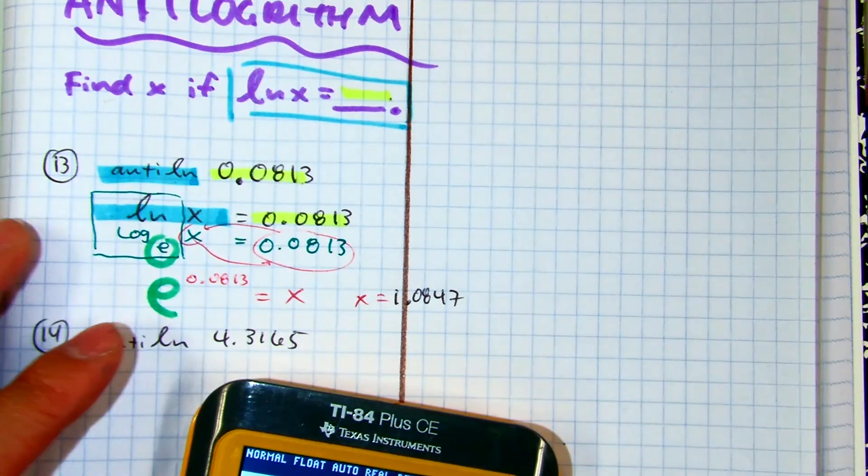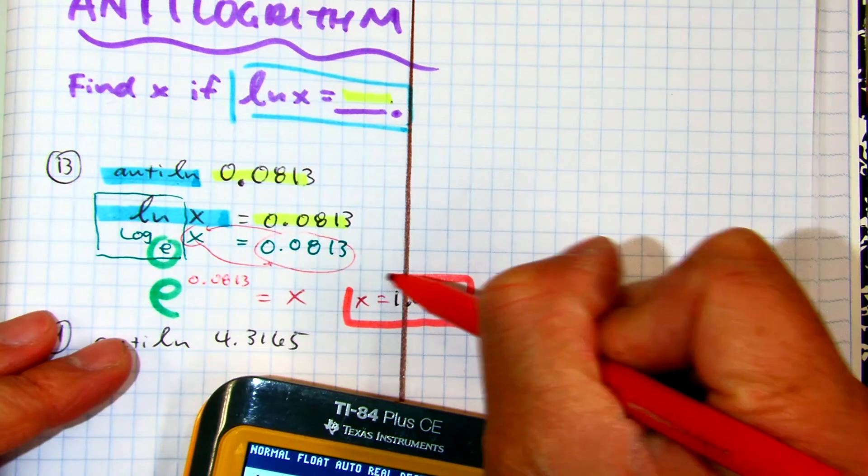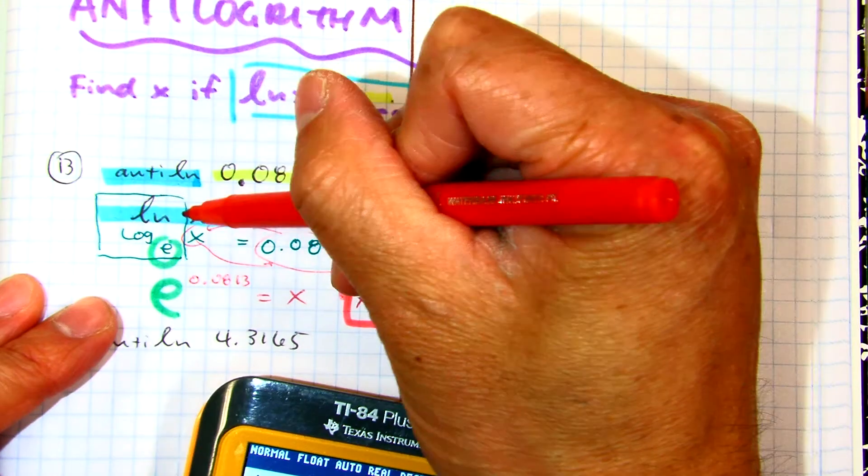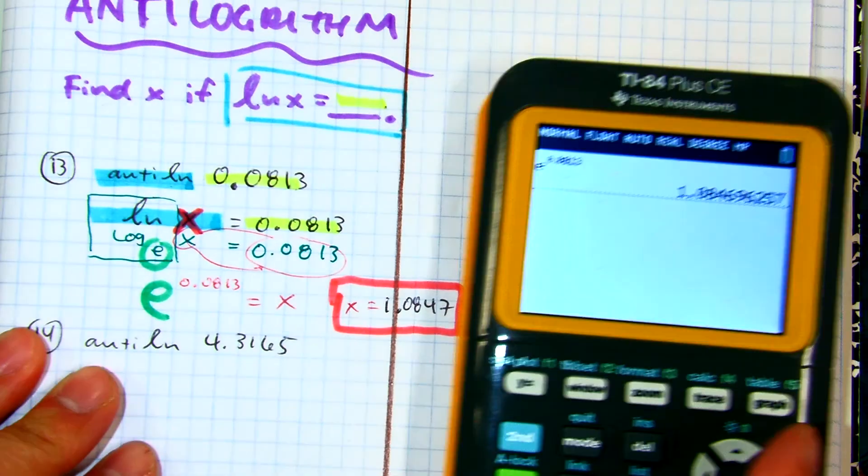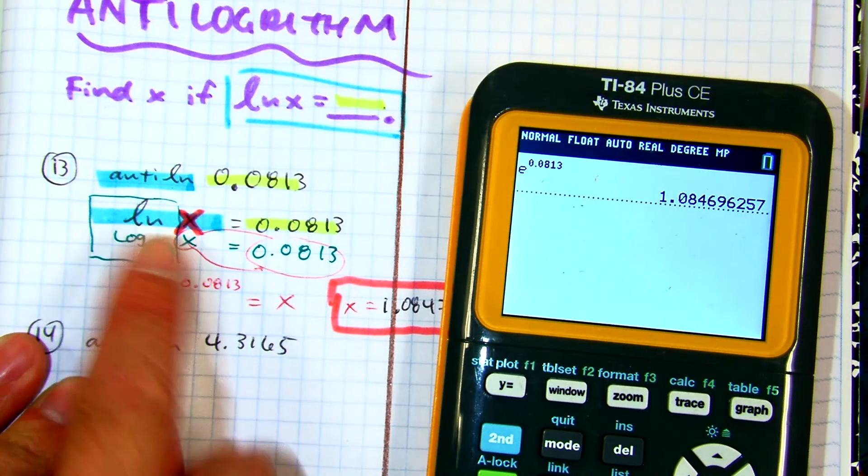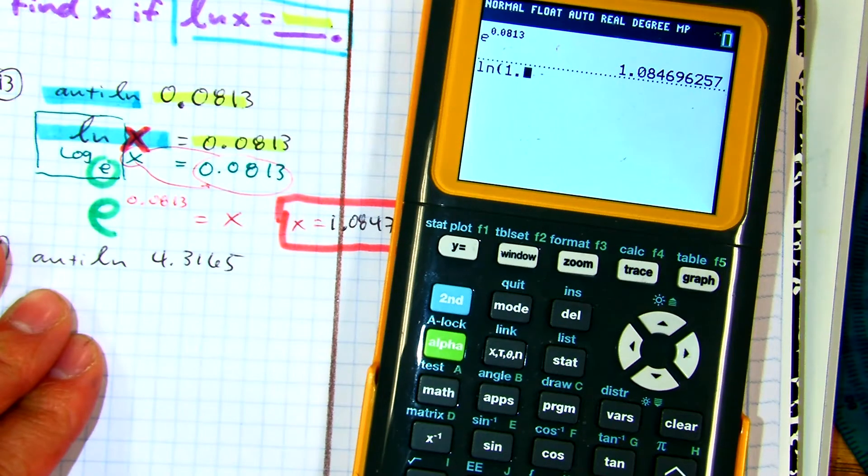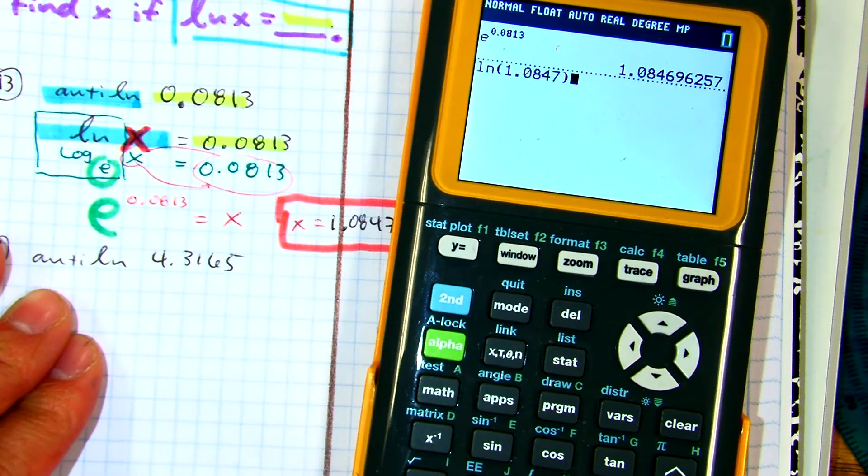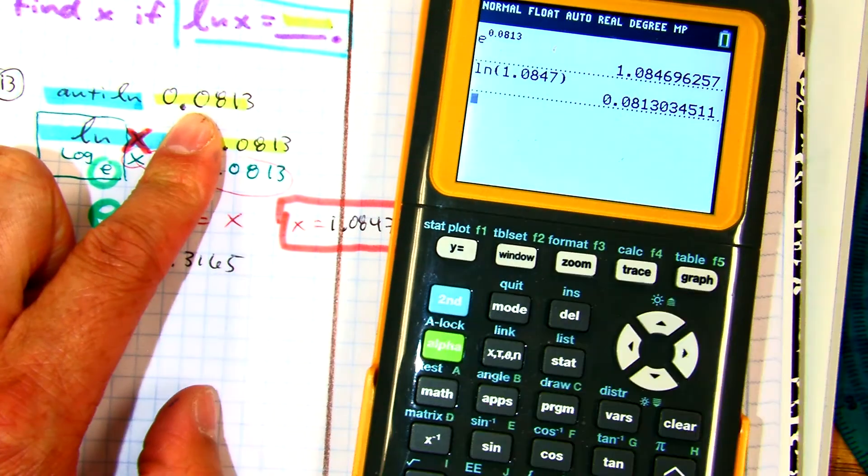And you can do the same thing we did under our last problem. You can actually check your answer. Because if you put in for the value of x, so natural log of that number 1.0847, we should get very close to that number. Super close. Okay?